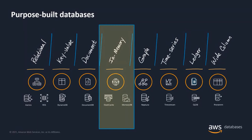Memory-based data stores provide predictable performance enabling high throughput. Before we dive deeper into ElastiCache, let's look at AWS purpose-built databases. In AWS, there are 15 purpose-built databases to choose from. We used to use one single database for multiple applications; today we use different databases for different purposes. The in-memory databases available include ElastiCache for Memcached, ElastiCache for Redis, and Amazon MemoryDB.